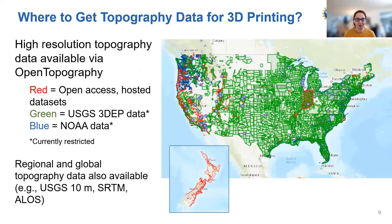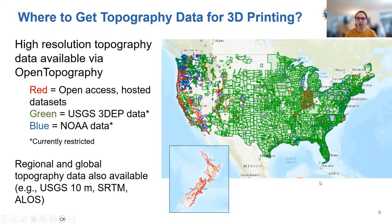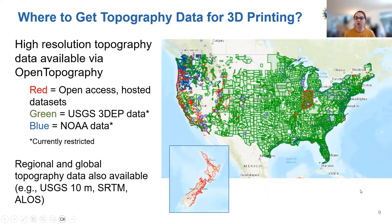Where would you go to get topography data for 3D printing? OpenTopography is a great repository for high-resolution topography data. Everything shown in red on the map is completely open access — lots in California, the whole state of Indiana, and also lots in New Zealand. What's shown in green is USGS 3D Elevation Program (3DEP) data, and blue is NOAA data mainly along the coasts. Those two datasets are currently restricted to academics. We also host regional and global topographic data — USGS 10 meter, SRTM, ALOS — so wherever in the world you want to grab topography for a 3D print, you can get it on OpenTopography.